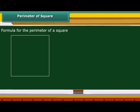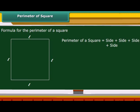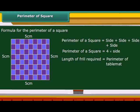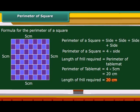Now let us work out the formula for the perimeter of a square. You are already aware that all four sides of a square are equal in length. Therefore, the perimeter of a square is 4 multiplied by its side. Suppose you want to add frills to all sides of a square table mat whose side is 5 cm. Calculate the length of frill required. The length of frill required equals the perimeter of the table mat, which is 20 cm. Therefore, 20 cm of frill is required.